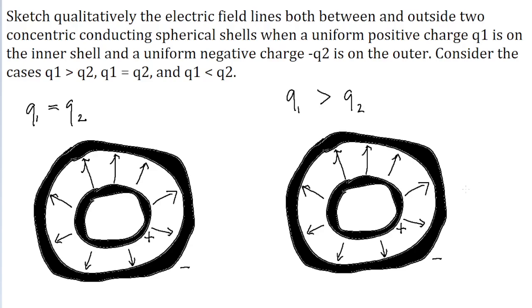that means that the inner shell is creating more electric field than can be terminated by the outer shell. So there is going to be some amount of electric field that continues spreading outside of the shell system, even after some of it has terminated at the outer shell. So we can represent that by drawing additional electric field lines stretching further on outside the shell.